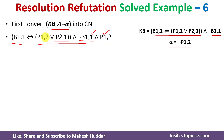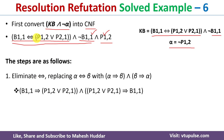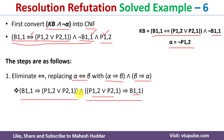We follow a simple procedure to convert the sentence into CNF. First, we remove the biconditional: alpha biconditional beta is equivalent to (alpha implies beta) AND (beta implies alpha). So B11 implies (P1,2 or P2,1), and (P1,2 or P2,1) implies B11. But now within each clause we have implications, so this is still not in CNF form.